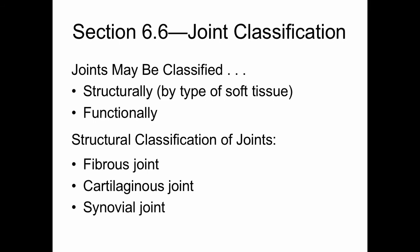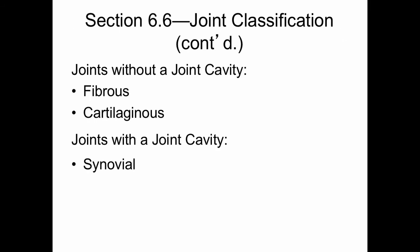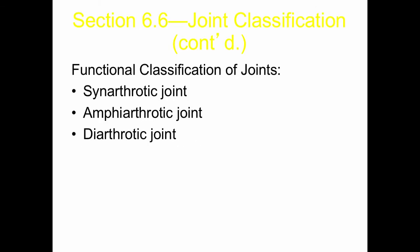Joint classification: joints may be classified both structurally and functionally. Structural classification includes fibrous joints, cartilaginous joints, and synovial joints. Fibrous joints are held together with dense fibrous connective tissue. Cartilaginous joints are held together by fibrocartilage or hyaline cartilage, and synovial joints are connected by joint capsules filled with synovial fluid. Joints without a joint cavity include fibrous and cartilaginous joints, while synovial joints all have a fluid-filled cavity. Synovial joints contain an outer fibrous layer and an inner synovial layer. These classifications correspond to the amount of movement allowed — diarthritic joints allow a great deal of movement.